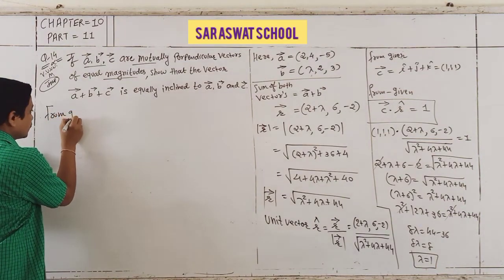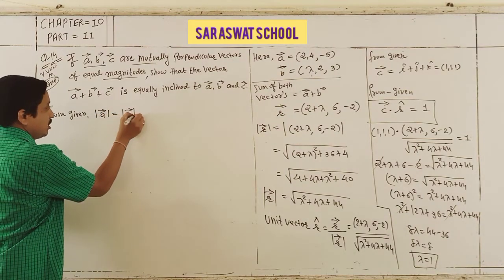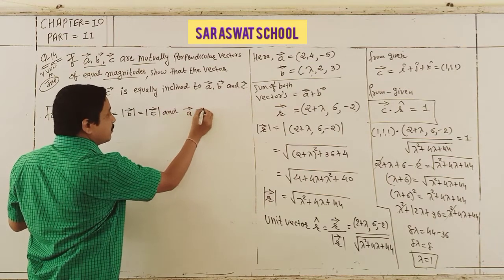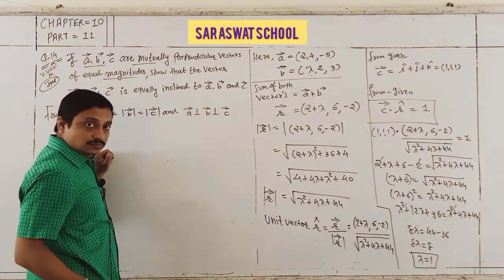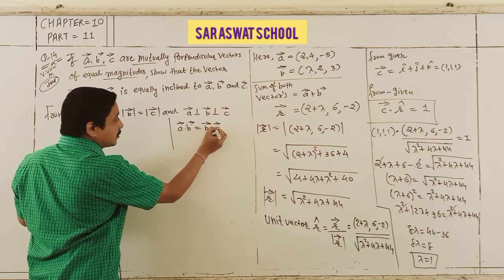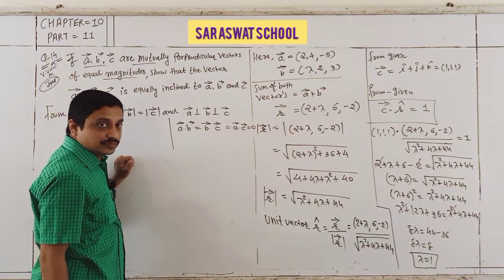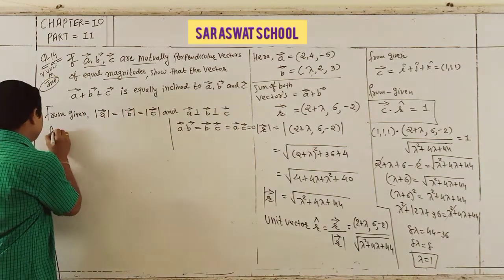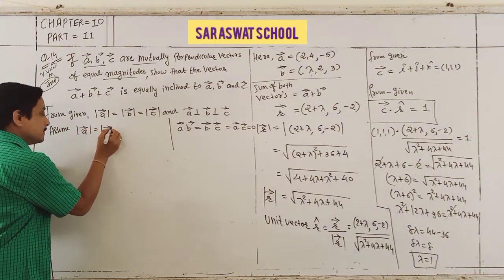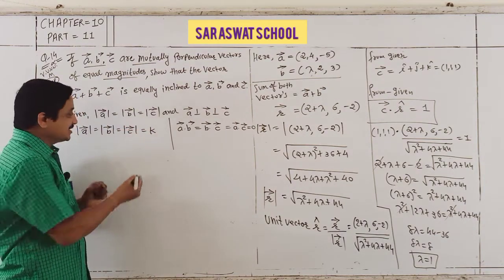Equally inclined means making the same angles. From the given: A, B, C are mutually perpendicular, so A dot B = B dot C = A dot C = 0. Equal magnitudes: |A| = |B| = |C| = K (assumption, K is any non-zero constant).